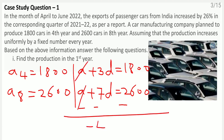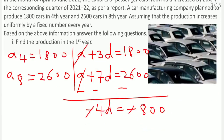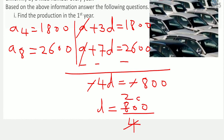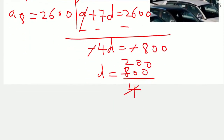Subtracting the equations: a and a cancel, leaving minus 4d equals minus 800. Cancelling the negative sign from both sides, d equals 800 divided by 4, so the common difference d equals 200.